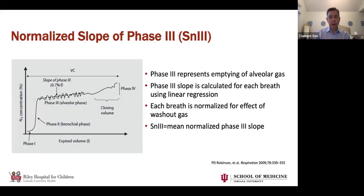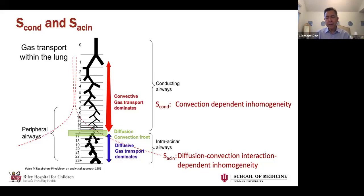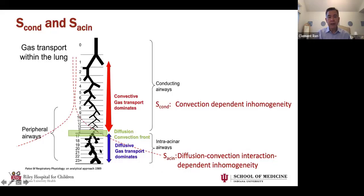You can use SN3 to calculate S-cond and S-acin. S-cond represents the slope of phase three in the convection-dependent areas — the conducting airways, which don't participate in gas exchange and where gas flow is essentially convective. S-acin, which you can think of as acinar or alveolar, also takes into account the diffusion component of gas transport.